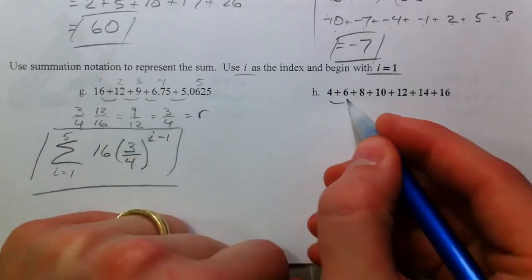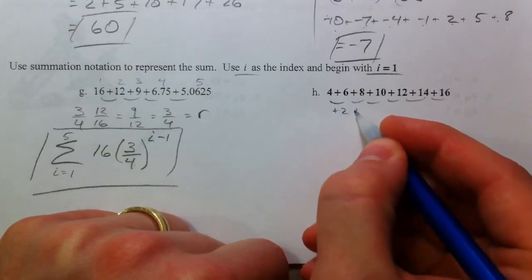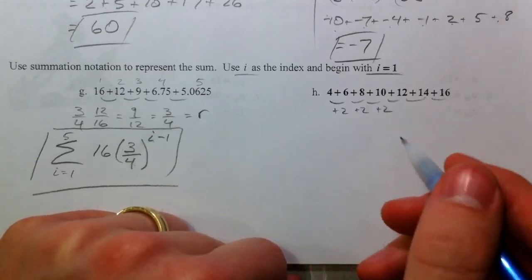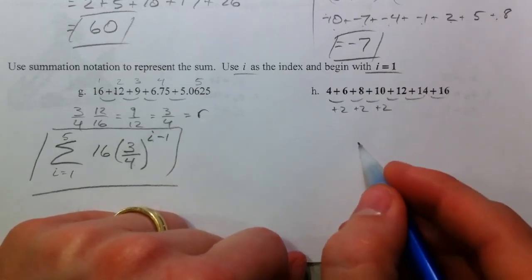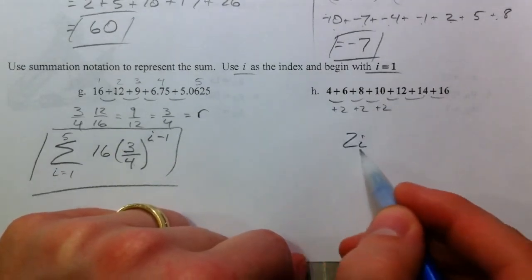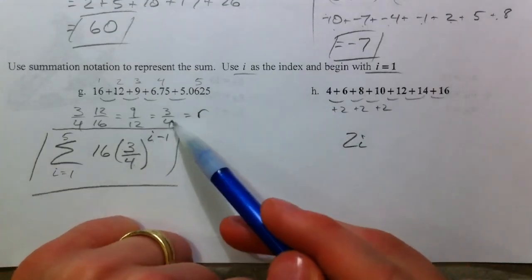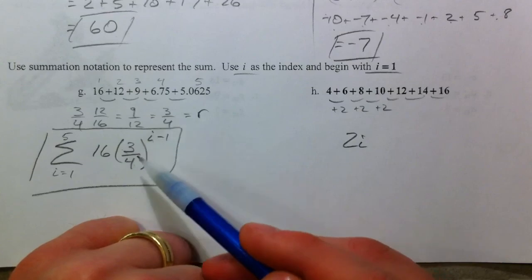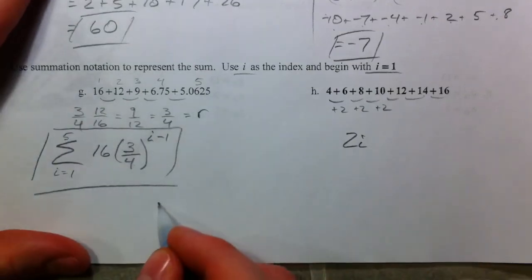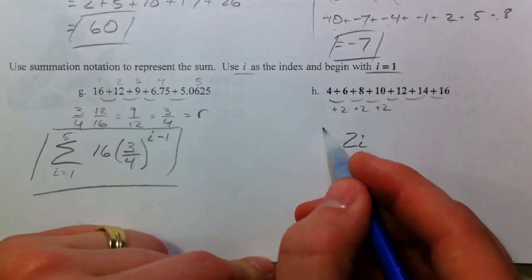The next one, 4, 6, 8, 10, 12, 14, 16. You notice that we're adding 2 every single time. So, we're going to have a 2 times I in there because we're repeatedly adding 2. So, that's like multiplication. Here, we're repeatedly multiplying by 3 fourths. Repeatedly multiplying by 3 fourths turns into exponents. We're going to have sigma.